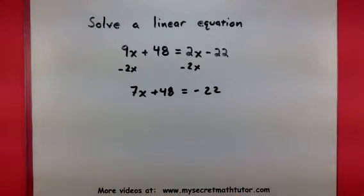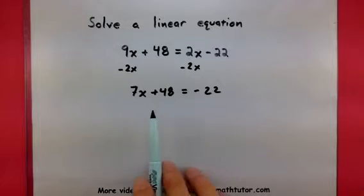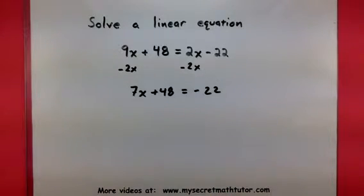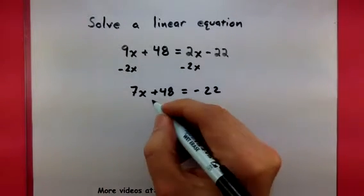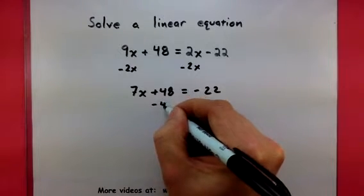Now that we only have one copy of the variable, just x over there, I want to make sure that it is all alone, all by itself. Well, that means I need to take care of this 48 and I need to take care of the 7. So one at a time, let's start moving these guys to the other side.